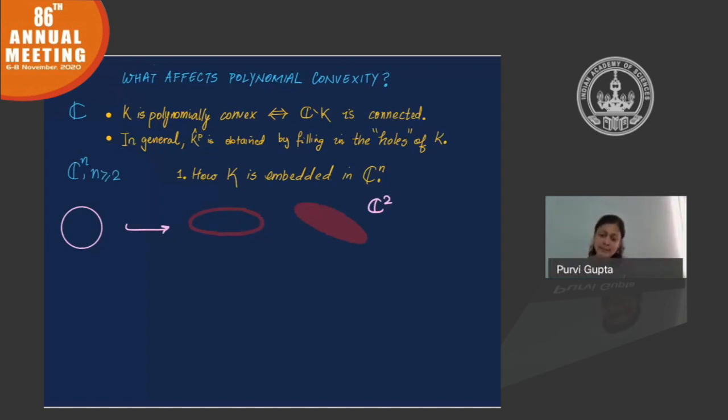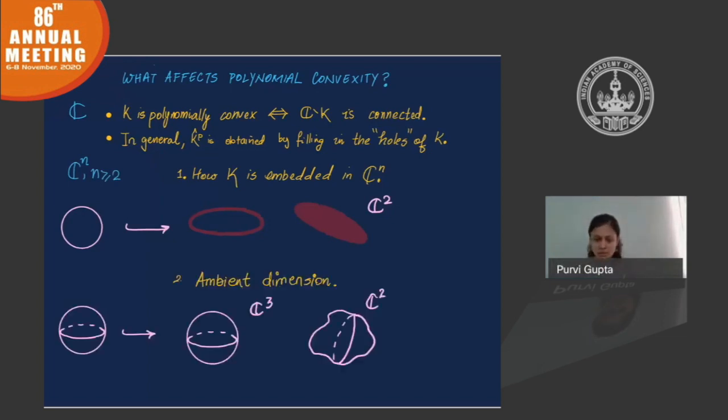The way the set is sitting inside C^2, it could have the same shape, but it could be sitting in different ways to have different convexity properties. What can affect the polynomial convexity is the ambient dimension. I have taken the example of a two dimensional sphere, a real two dimensional sphere. There are many ways in which I can place it inside the three dimensional complex space so as to make it polynomially convex.